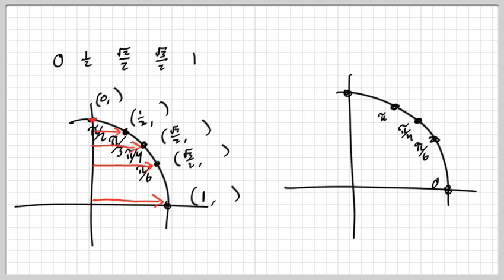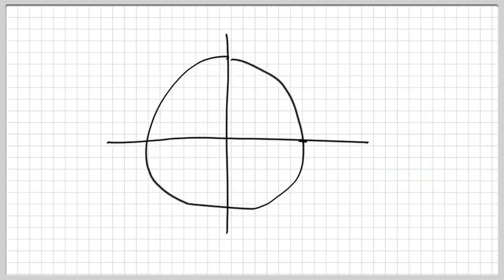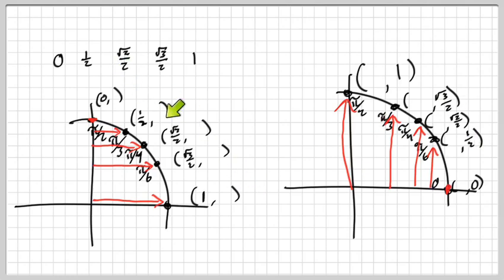Now let's do sine, which is the vertical height. Our longest vertical height is going to be at pi over 2, so that's where the 1 goes. Then as we go down, we keep getting shorter: 1, then √3/2, then √2/2, then 1/2, and 0. You can count up from the bottom if you prefer — either way works, just as long as you know the order. Then you put these y-values in, and you have your first quadrant complete.